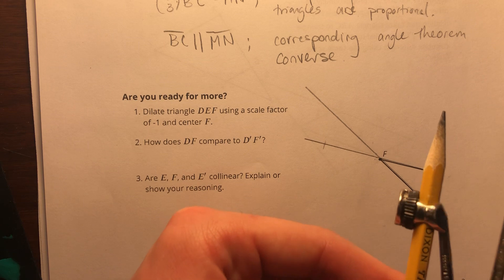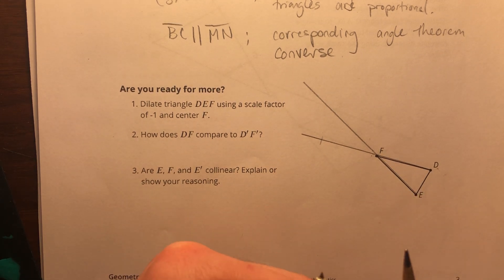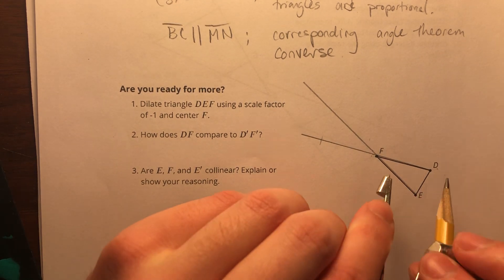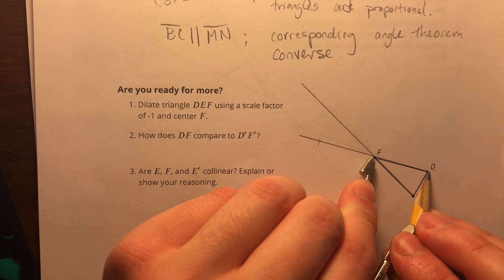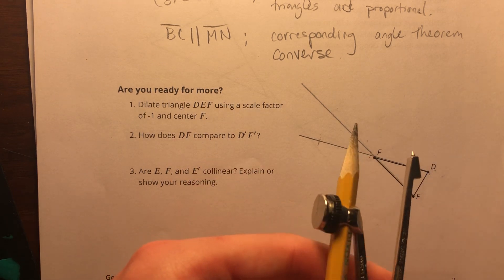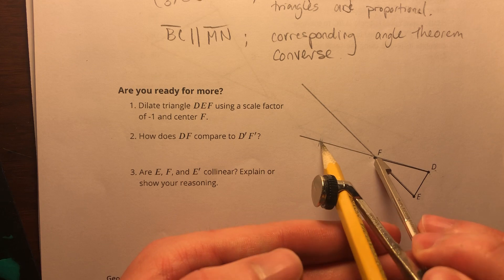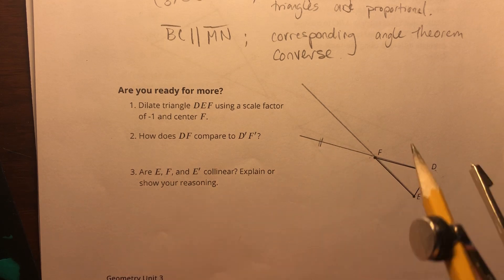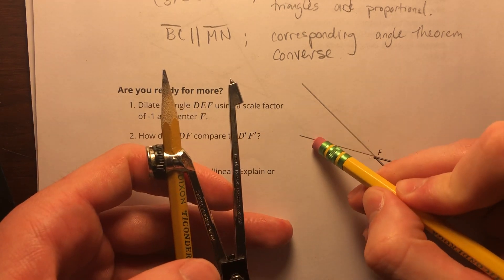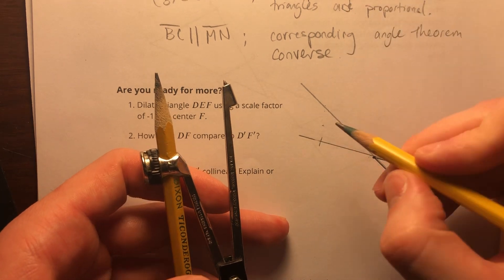Now to dilate it, I'm going to set my compass equal to FD, and then I'm going to swing it around to the other side and mark off that same distance. This is going to tighten my compass a little bit. Let me make sure I got that right. Making sure I've got the same distance here. And I was a little bit off, so I'll use that inner one instead of that outer one. And that'll be D prime.